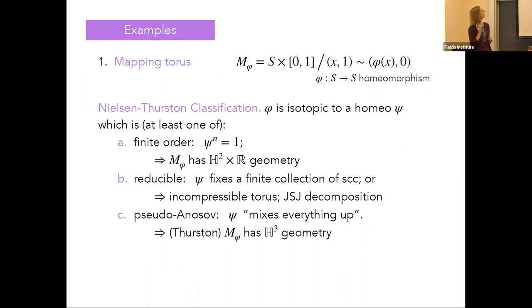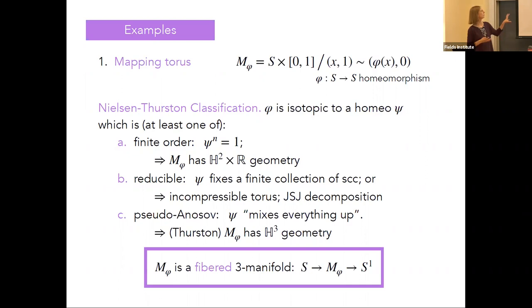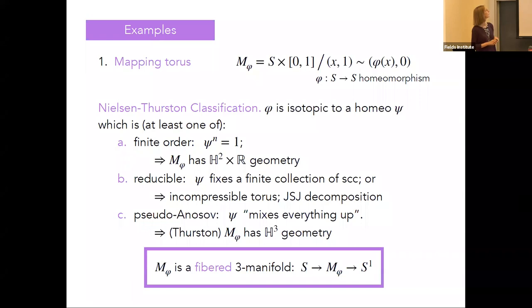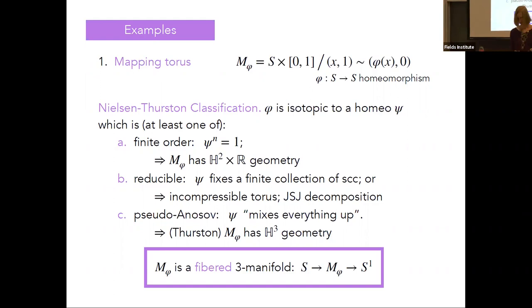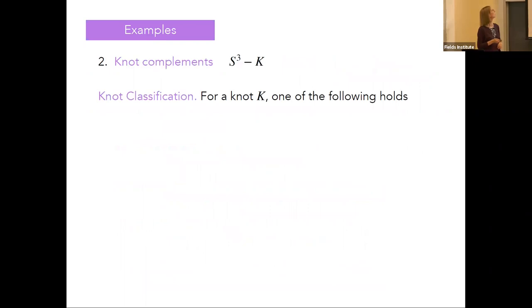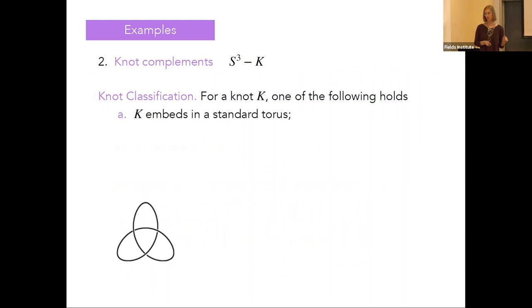This manifold we call a fibered three-manifold because it's a surface bundle over the circle with fiber your surface. If you see 'fibered three-manifold,' it really means fibered over the circle with surface fibers. For knot complements, we can similarly classify. There are three different things that can happen with a knot — three different behaviors — and this mirrors in some ways the Nielsen-Thurston classification we just saw.